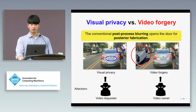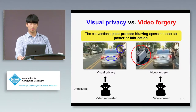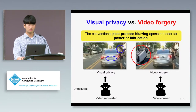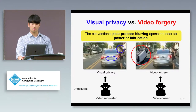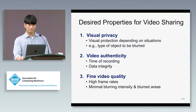we can think of two different types of attackers. One is a video requester who may want to recognize original sensitive content. The other is a dishonest video owner who may want to fabricate video evidence before sharing.